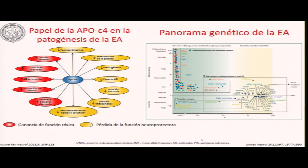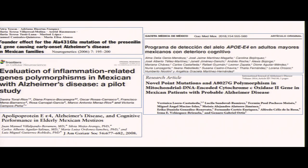Hay dos elementos relacionados con el estado de portador de la apolipoproteína E en su alelo Epsilon IV: pierde efecto neuroprotector su presencia e incrementa el efecto neurotóxico. Aunque hay genes relacionados a la forma hereditaria de la enfermedad, hay polimorfismos aún no identificados, algunos en poblaciones muy particulares, que confieren riesgo. En México se han realizado estudios intentando establecer si el genotipo portador del alelo Epsilon IV confiere riesgo; algunos no han encontrado asociación, otros han demostrado que sí existe riesgo de proceso demencial.